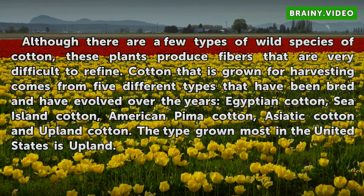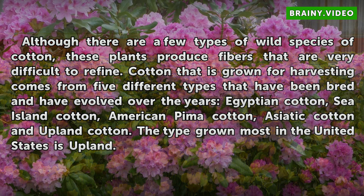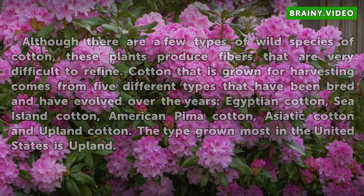Although there are a few types of wild species of cotton, these plants produce fibers that are very difficult to refine. Cotton that is grown for harvesting comes from five different types that have been bred and have evolved over the years: Egyptian cotton, Sea Island cotton, American Pima cotton, Asiatic cotton, and Upland cotton. The type grown most in the United States is Upland.